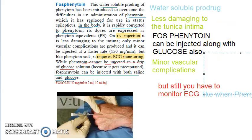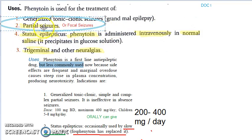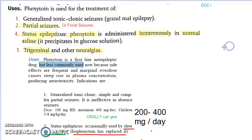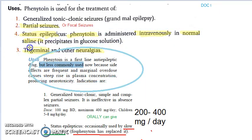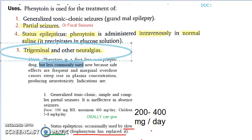The uses of phenytoin: it is used in generalized tonic-clonic seizures or grand mal epilepsy, partial seizures — simple or complex, also called focal seizures — and status epilepticus, given along with benzodiazepines. Remember, phenytoin should not be given in glucose; however, phosphenytoin can be given in glucose. Trigeminal and other neuralgias — you can also give phenytoin for these.